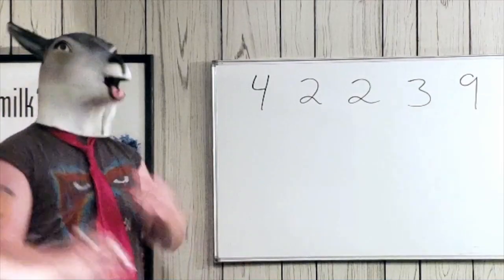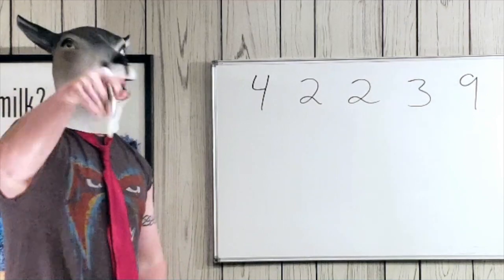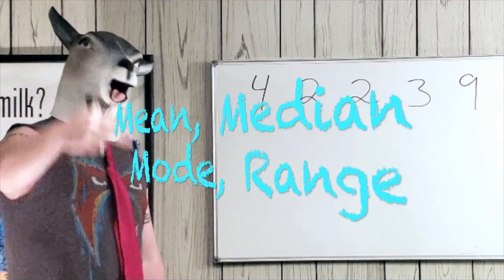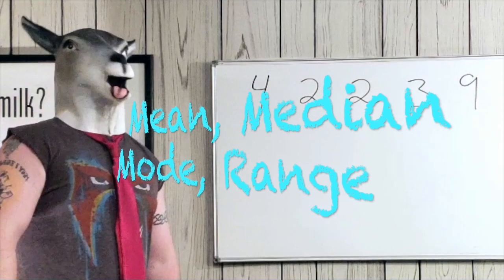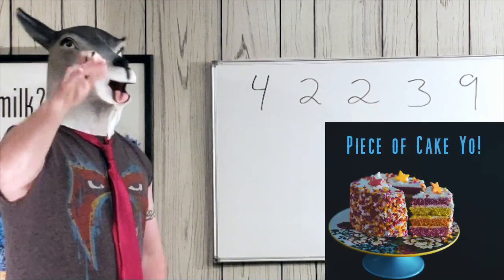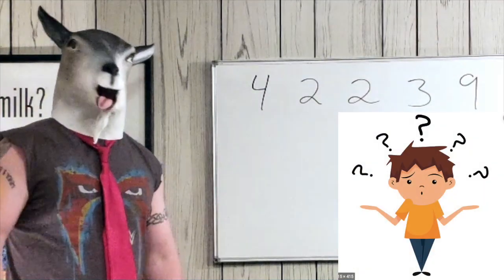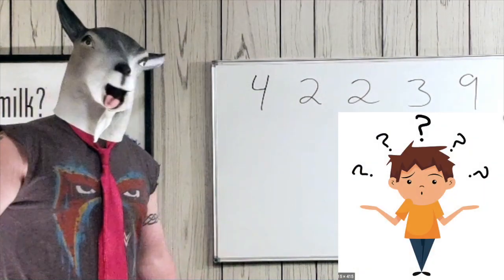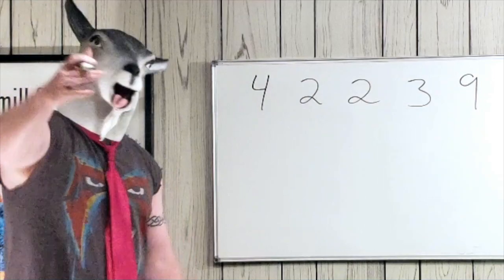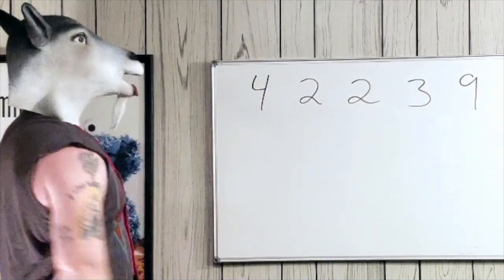Friends of the Go, here we are again, ready to punch the numbers in the face. Now today we're gonna do mean, median, mode, and range. Now listen, it's simple math, but here's what happens — you forget which is which. How am I supposed to remember which is which? Well there's a couple little tricks I'm gonna show you, and it's gonna be awesome. So we got our numbers here.